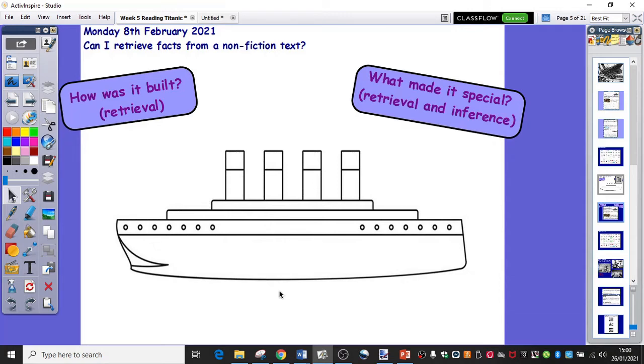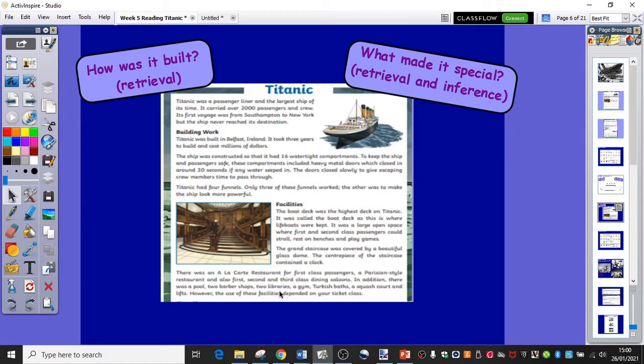Okay, so this is the part of the text that we're going to focus on today. We're going to be looking at these questions. How was it built? So straightforward retrieval activities there. And what made it special? And you might actually start to do a little bit of inference because you might make your own deductions, your own conclusions about what the Titanic was like. So I'm just going to read this little part with you. So we're going to look at building work and we're going to look at facilities.